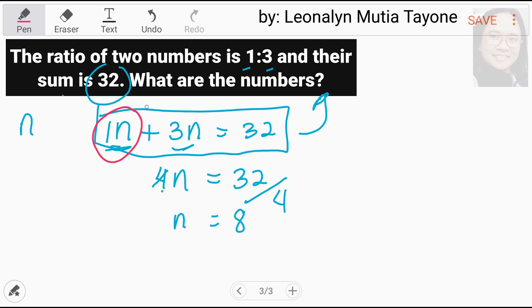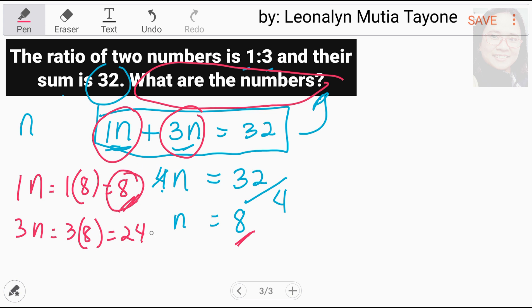Ngayon, balikan natin itong dalawa. 1n. That is, i-substitute natin si n kasi ang value ni n ay 8. So, 1 times 8 equals 8. Ang isa, 3n. 3 times 8 equals 24. So, what are the numbers? 8, ang isa ay 24. At kung i-double check mo, si 8 plus 24, and that is 32.